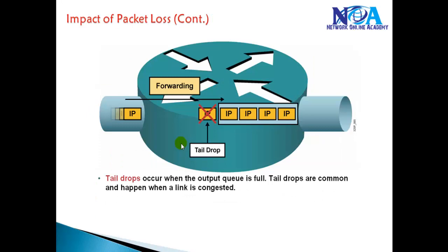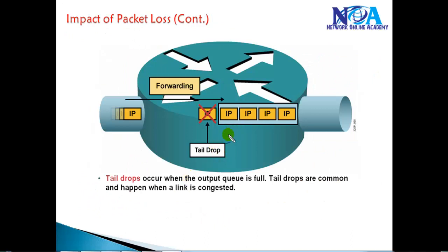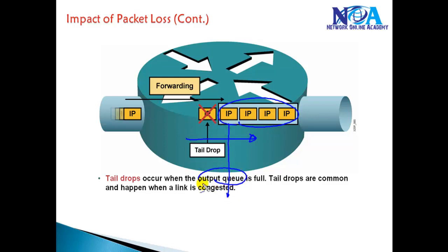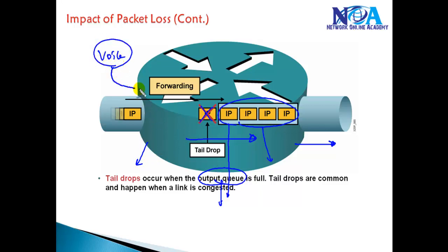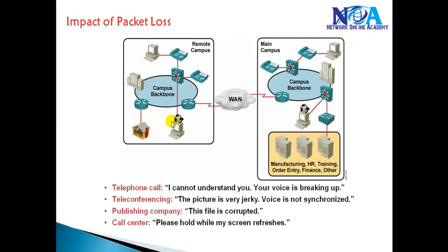The second problem is packet loss. Packet loss generally happens when the router receives packets and tries to send them. Based on the output queue and the number of packets it can hold, once the queue reaches its maximum limit, it will automatically start dropping packets. For example, if voice traffic is queued and the output queue is full, packets will be automatically dropped. For critical traffic, we don't want that to happen.